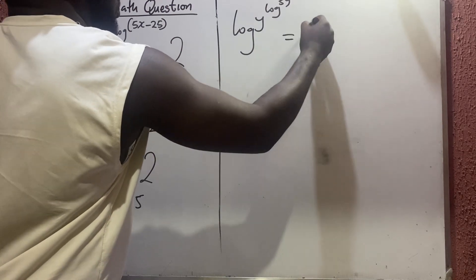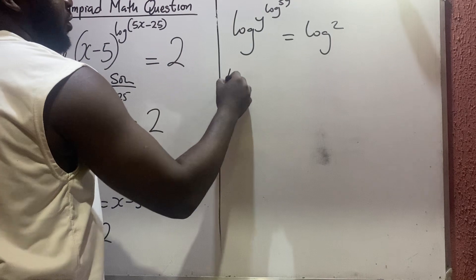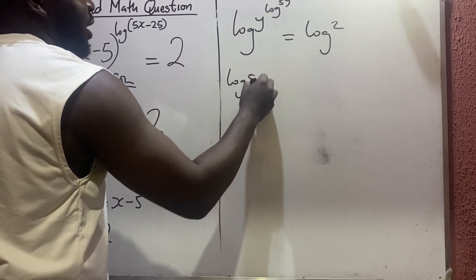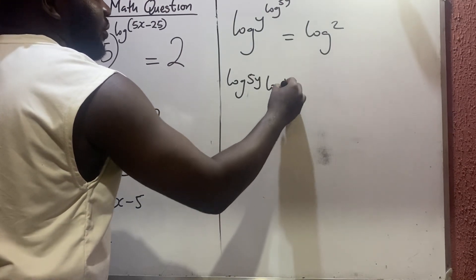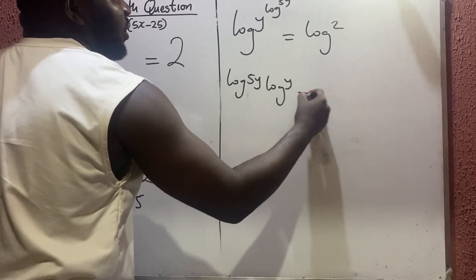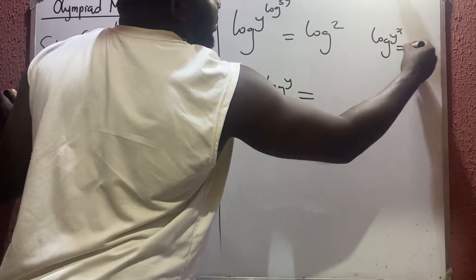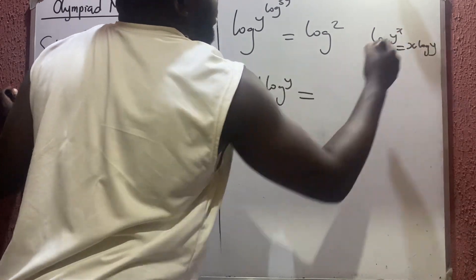This one can go to the bar so that you have log 5y times log y. According to law of indices, log y raised to x equals x log y, so it can go to the bar. I'm having log 5y times log y equals log 2.